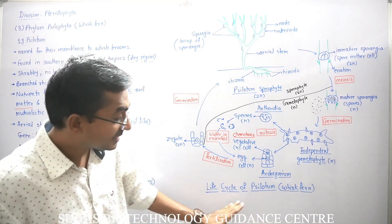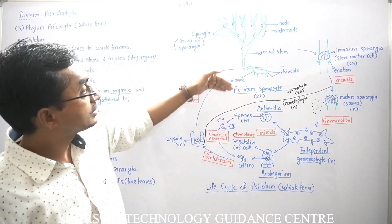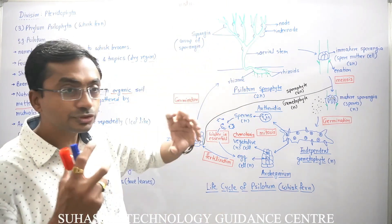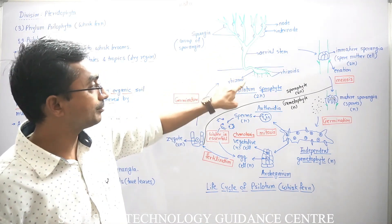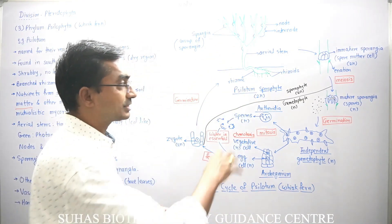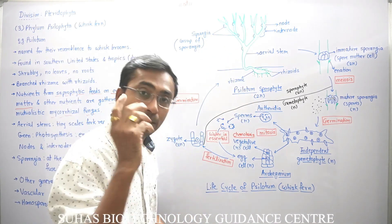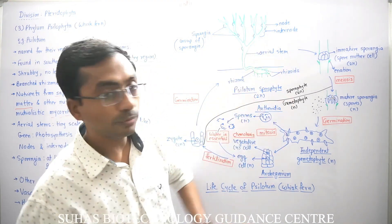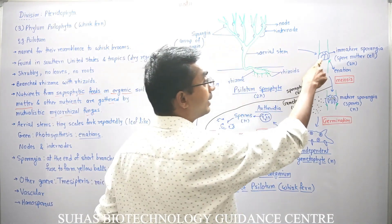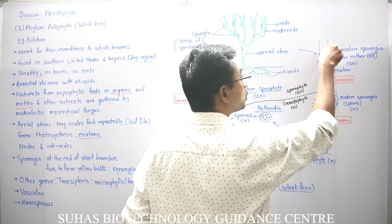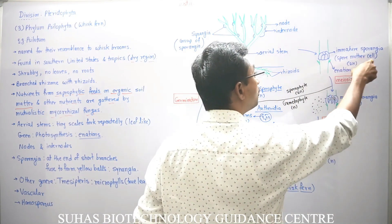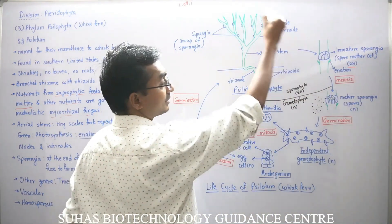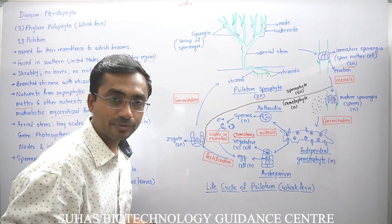Now let's move to the life cycle of Psilotum, the whisk fern. This is the plant — you can see nodes and internodes are there, synangia which are the fused sporangia, aerial stem, rhizome and rhizoids. The rhizoids and rhizome are associated with mycorrhizal fungal symbiotic association. If you observe the sporangia — that is, the synangia — the immature sporangia will have spore mother cells. The spore mother cell is diploid because this is a sporophyte plant, and the complete sporophyte plant is diploid.